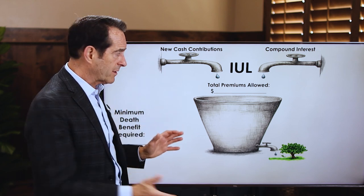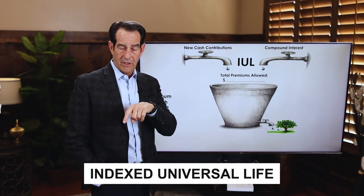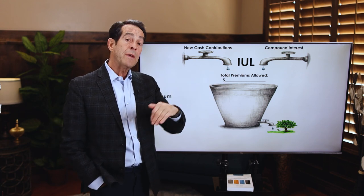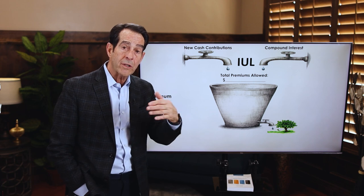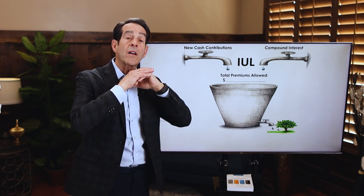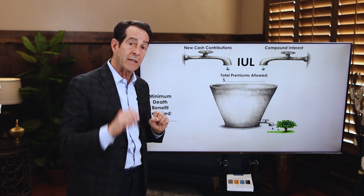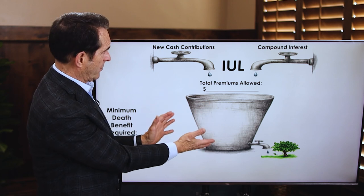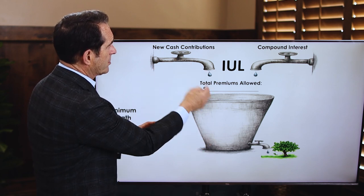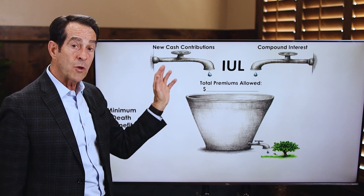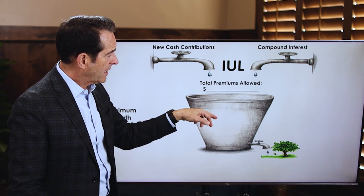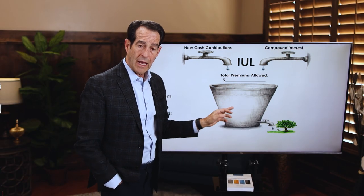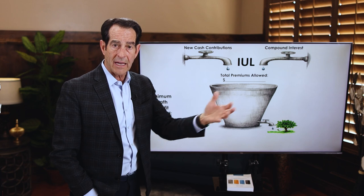I compare this metaphorically to a bucket. Indexed universal life was introduced in 1997 when interest rates started to come down, so that people could have the choice to earn a higher rate of return than just the general account portfolio rate. You're designing an IUL policy like a bucket — a repository — to accommodate the amount of money you want to put in there so you can access it tax-free, with all the interest and growth tax-free.